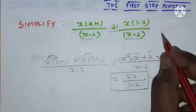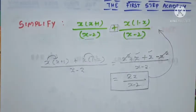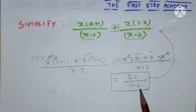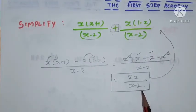So 2x divided by x minus 2 is the answer for this particular question. Hope you can understand how we found how we solved this.